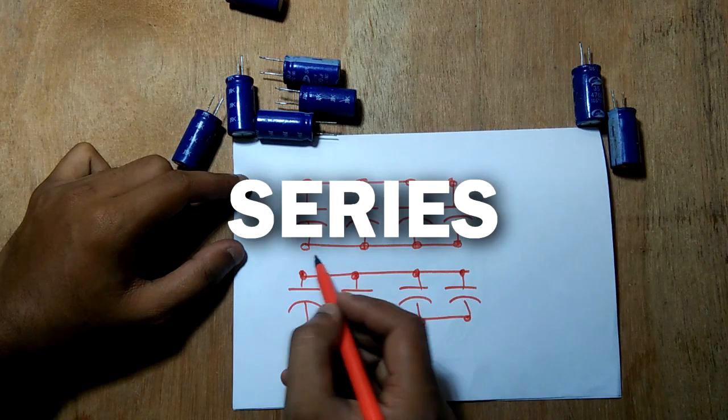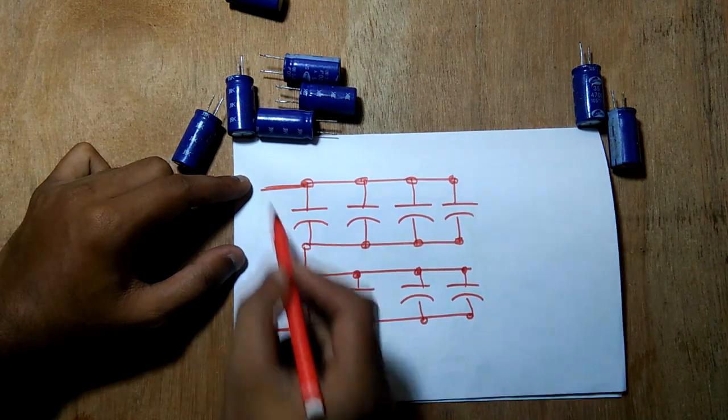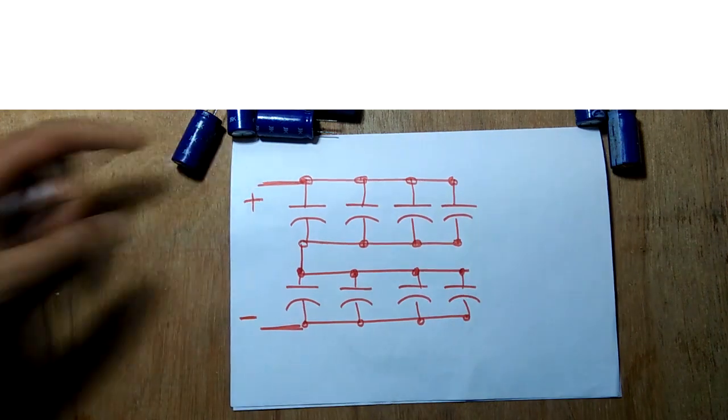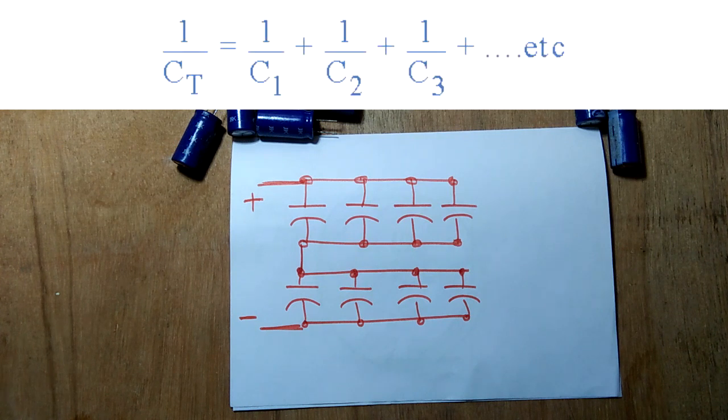For series, the current flowing through them will be same. Therefore, each capacitor will have same charge. When adding together capacitors in series, the reciprocal of the individual capacitors are all added together, just like resistors in parallel, instead of the capacitance themselves.